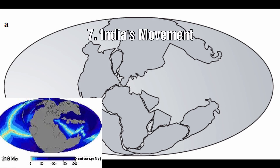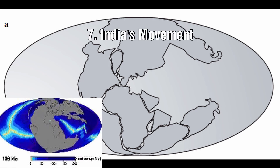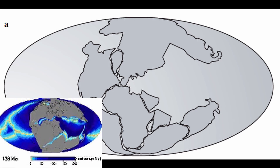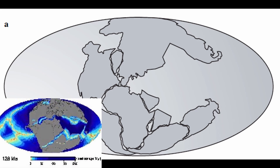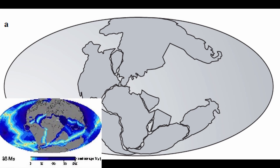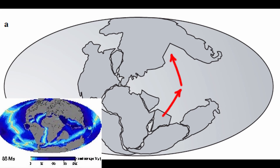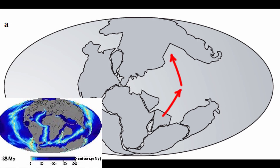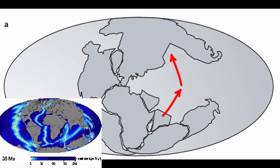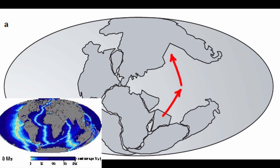Problem 7: India's Movement. Considering the original position of India when it was part of Pangaea versus its later location — if India had indeed travelled up towards Eurasia and turned in the process, we would expect there to be magnetic anomalies compared to its resting place. No linear magnetic anomalies have ever been found.